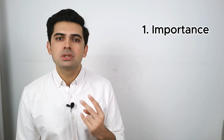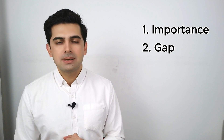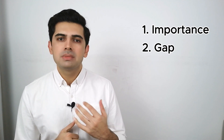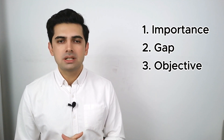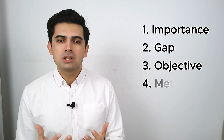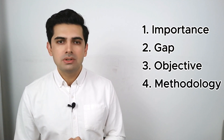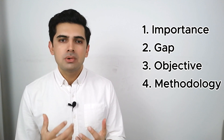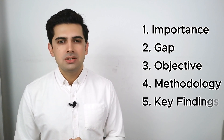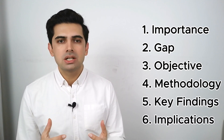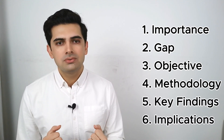To summarize, there are six things that we need to mention in the abstract of a research paper. Number one, the importance of the study. Number two, the gap statement. Number three, the objective of the study. Number four, the methodology that we use for conducting the study. Number five, key findings. And number six, the implications of your findings.